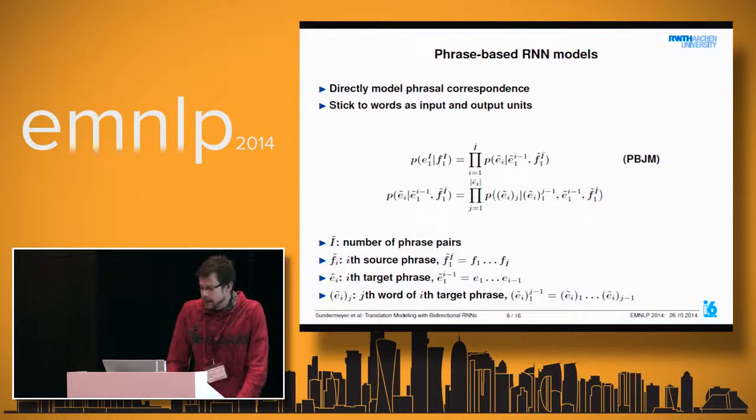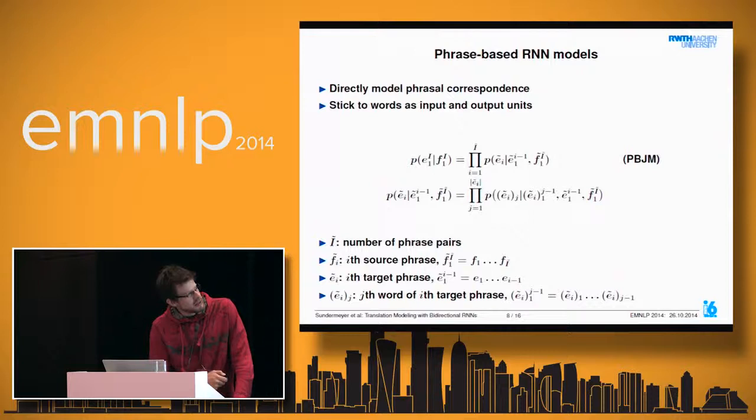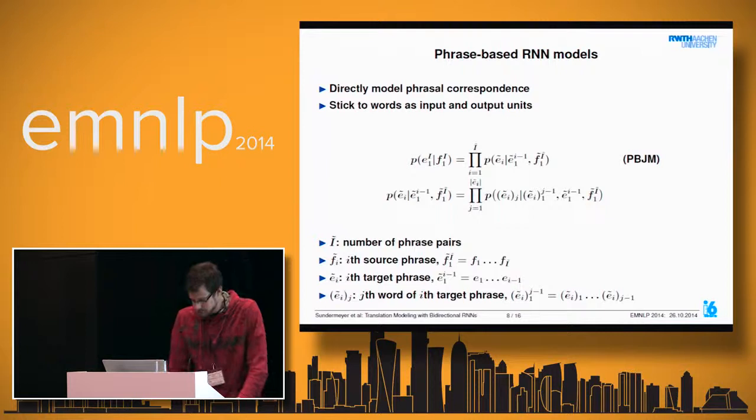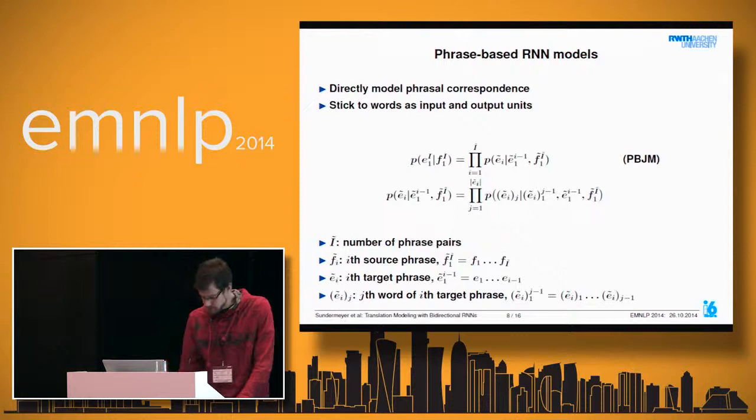In this case, the posterior probability is factorized over individual phrase pairs. Given capital-I-tilde phrase pairs, where E-tilde and F-tilde are the separate phrase pairs, we factorize over phrase pairs, and each phrase pair is further factorized over the individual target words.